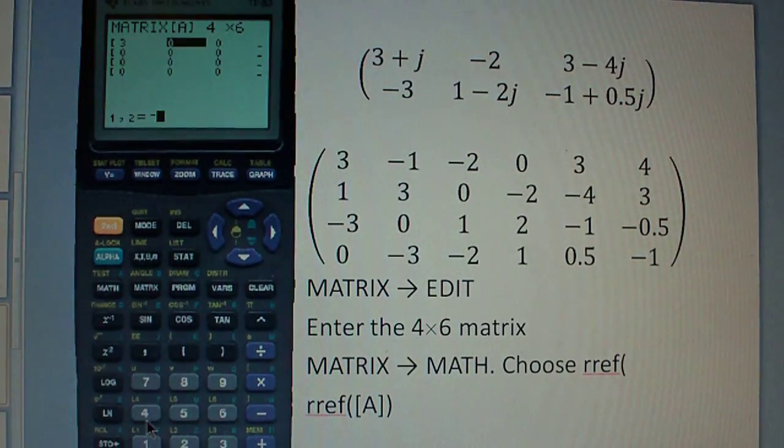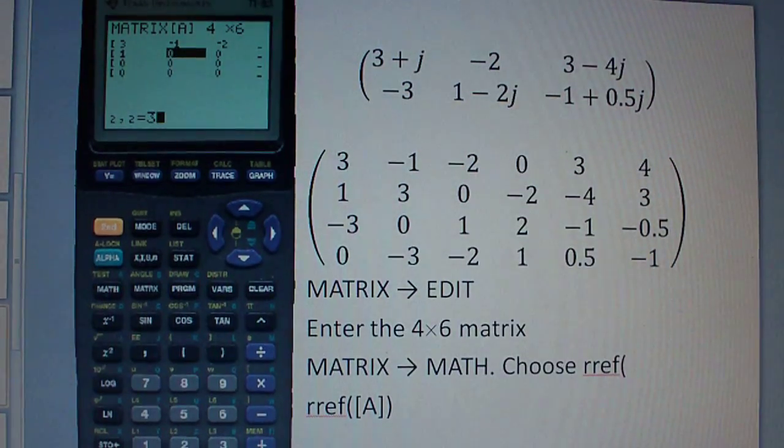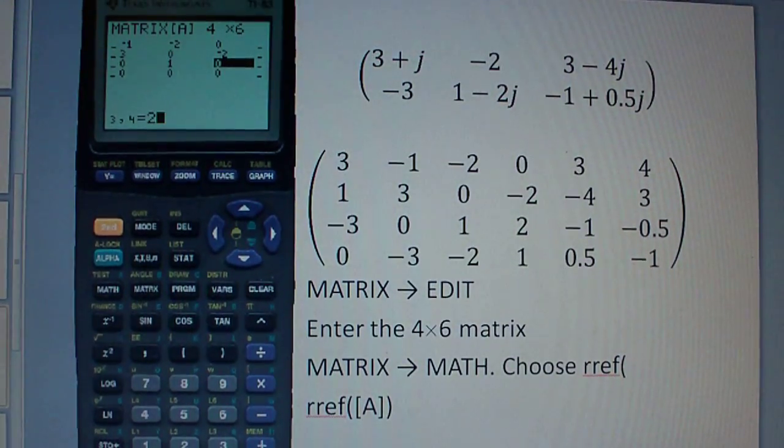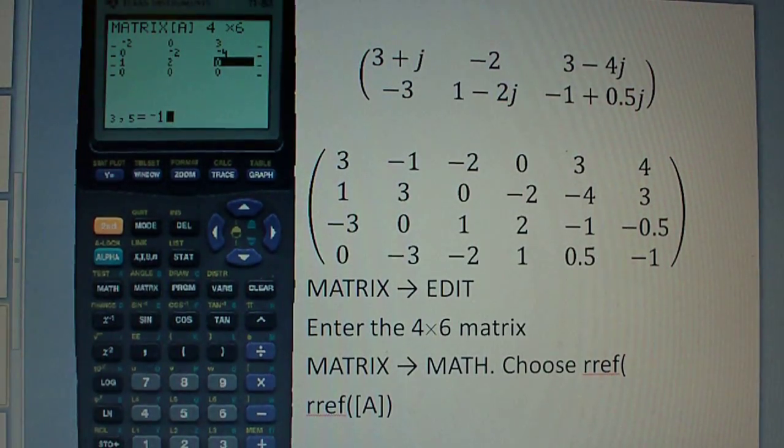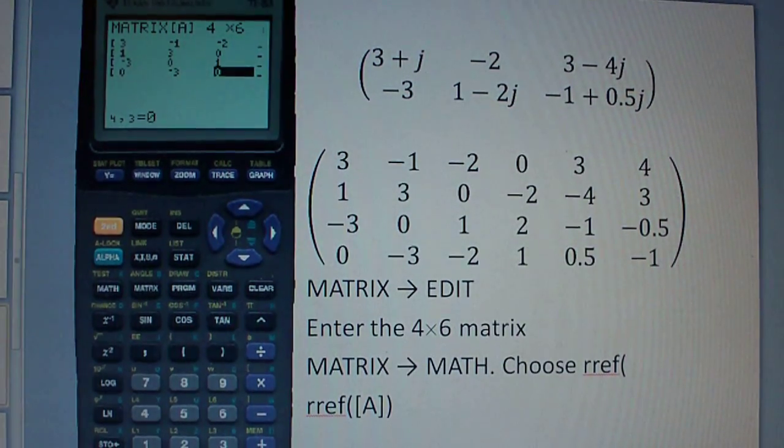3, negative 1, negative 2, 0, 3, 4. 1, 3, 0, negative 2, negative 4, 3, negative 3, 0, 1, 2, negative 1, point 5, 0, negative 3, negative 2, 1.5, negative 1.